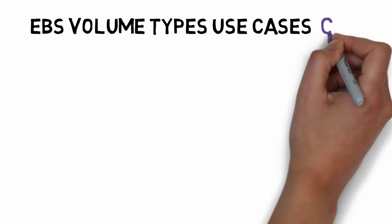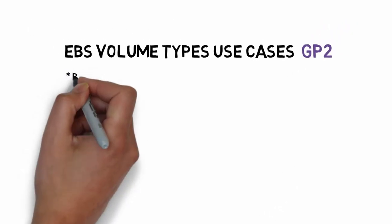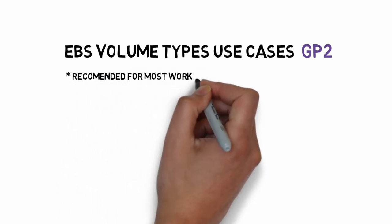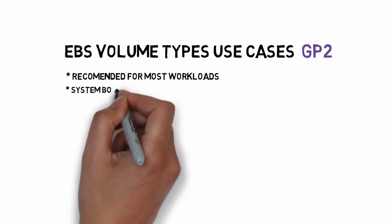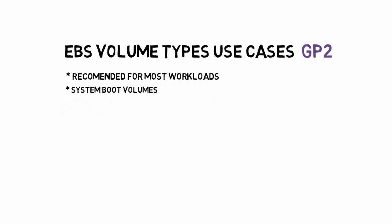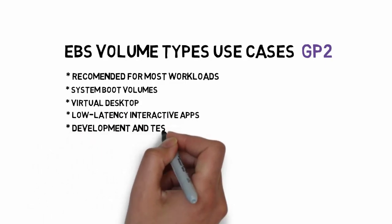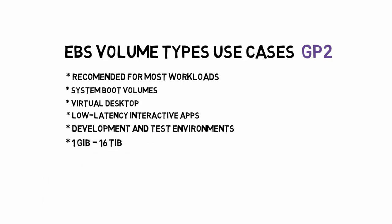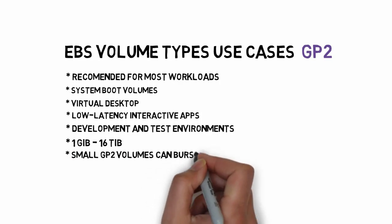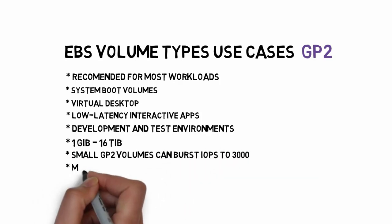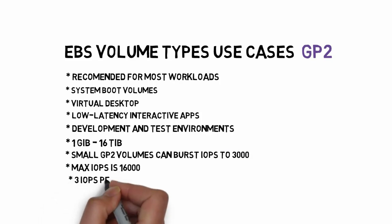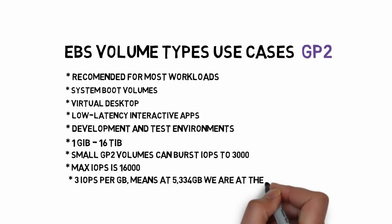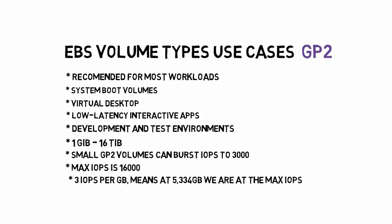EBS volume types use cases for GP2. GP2 EBS volumes are recommended for most workloads, including system boot volumes, virtual desktops, and low-latency interactive apps. Development and test environments can also use GP2. The minimum size is 1 GB and maximum is 16 TB. Small GP2 volumes can burst IOPS to 3000, and the maximum IOPS supported is 16,000. At 3 IOPS per GB, you reach maximum IOPS at 5334 GB.